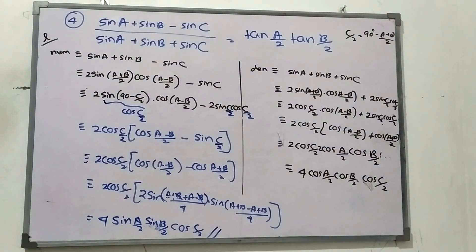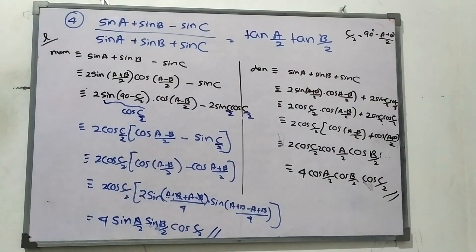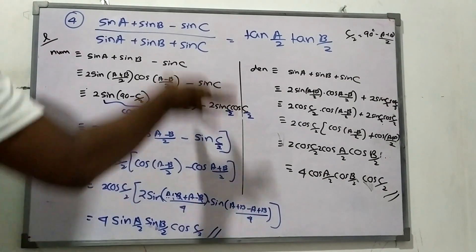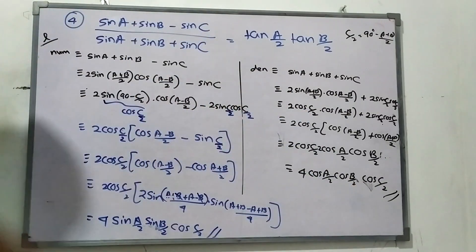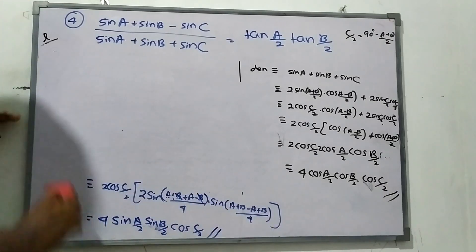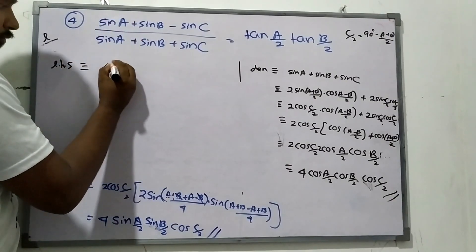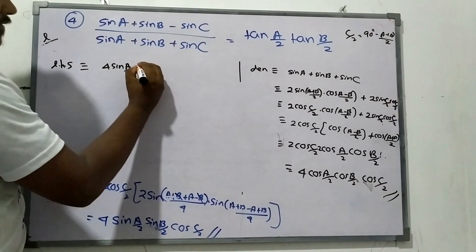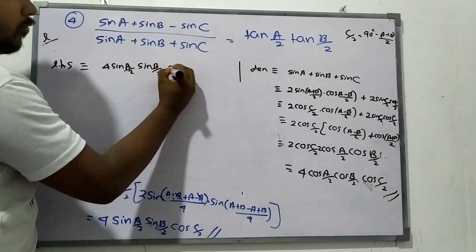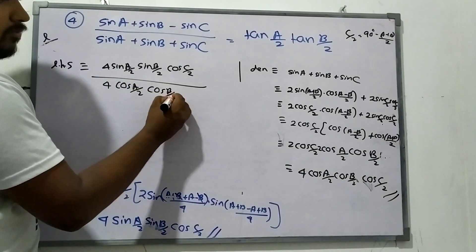So you have the numerator and the denominator. Now what I'm going to do is substitute those values. Alright, left-hand side becomes: 4 sin A by 2 sin B by 2 cos C by 2, all over 4 cos A by 2 cos B by 2 cos C by 2.